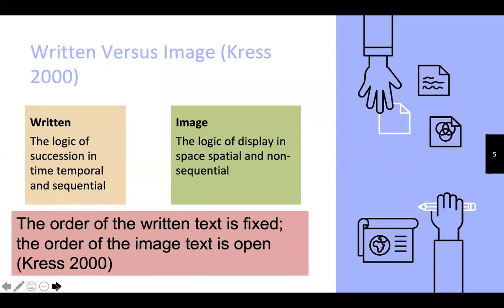So what is the difference between written and image? For written, it follows a logic of succession in time — temporal and sequential. It means that if we have lexical items or words and we put them together, we have to put them in the right order, in the right sequence. If not, it will not make a sentence because it will not have a meaning.